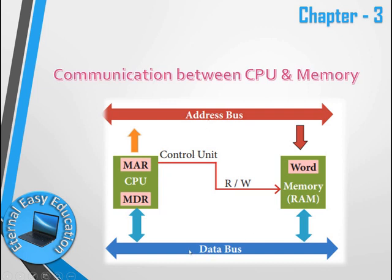The address bus and data bus are used for communication. The data bus is used for transferring CPU data. The address bus stores address information in the CPU. All information stored in memory has an identification mark, which is the address.